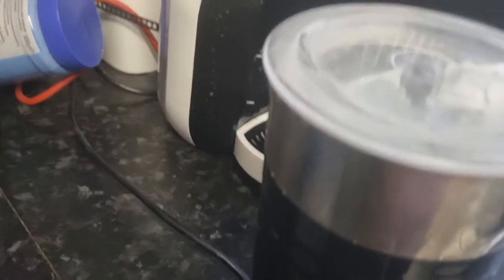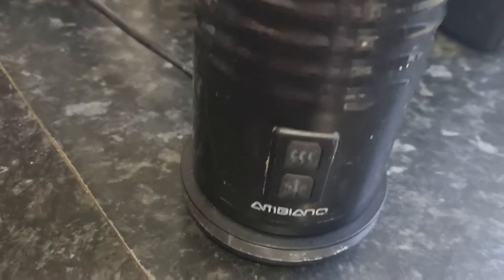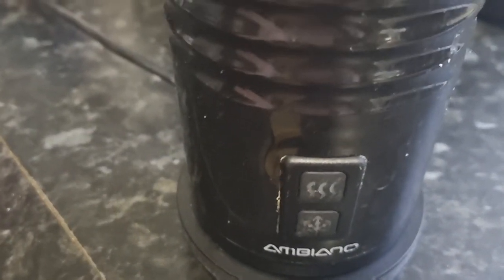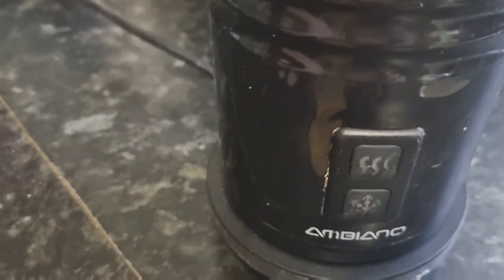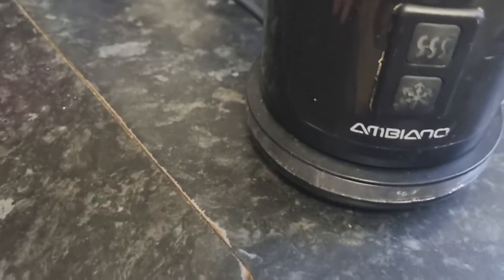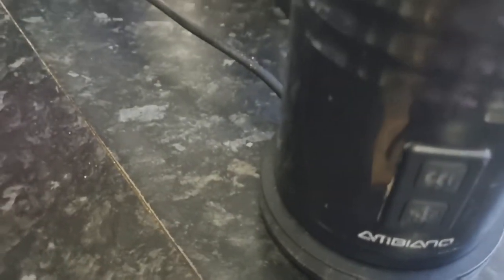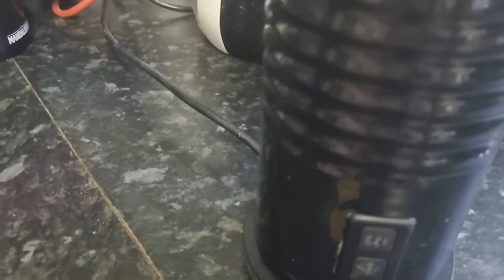This is a milk frother from Aldi's. We've had it quite a number of years now and it really really does make lovely frothy milk for on the top of a coffee, a hot chocolate. It has a setting, you can do it hot or cold, you just press the button, it starts whizzing, and the light will flash when it's ready.